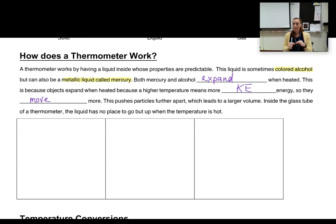This pushes the particles further apart, which leads to a larger volume. So what we saw is inside the glass tube, when we have a larger volume, there's no place for the liquid to go when it's hot but up in the thermometer.